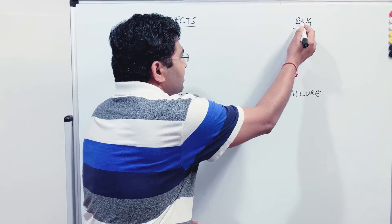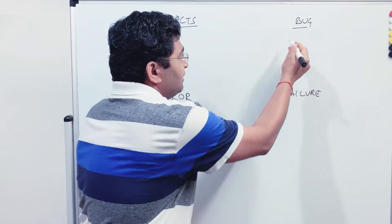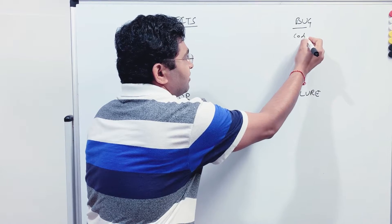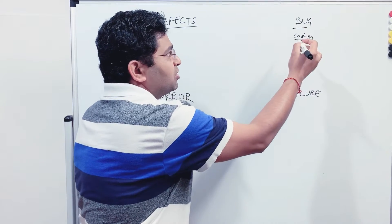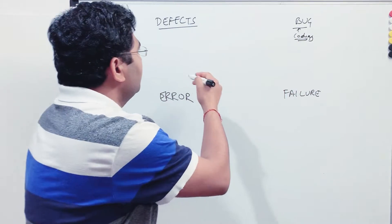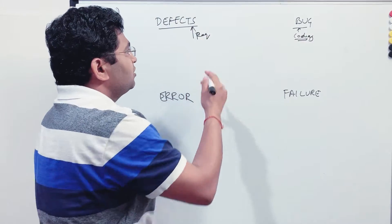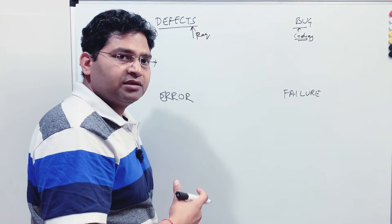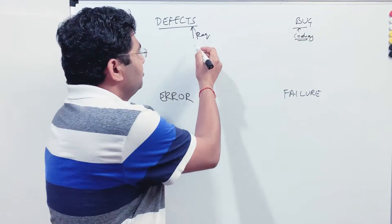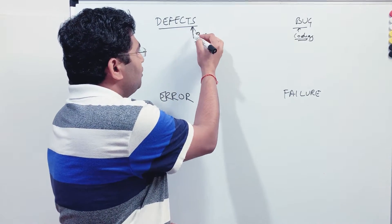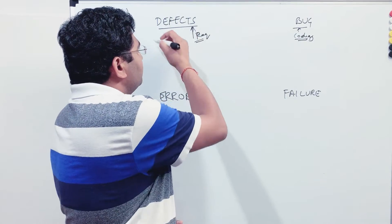A deviation is categorized as a bug only if the failure is because of a coding error. If the deviation is related to requirements — say, a missing or misunderstood requirement — and the actual outcome is not as per expectation because of requirement issues, then that is known as a defect.